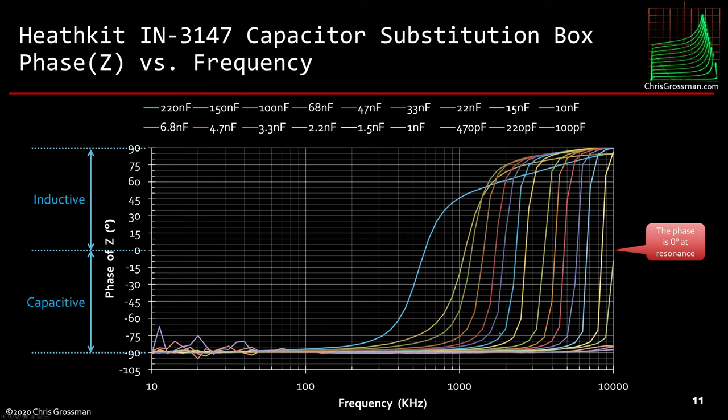Now if we look here, this is the phase of the impedance. You can see at low frequency there's some noise in the small capacitors, but that's not unexpected. Even the biggest capacitor at 200 kilohertz essentially still looks like a capacitor. So if you use this thing at 200 kilohertz or below, it's just a capacitor. You don't have to worry about it. When you get above that, you have to start thinking about what's going on.